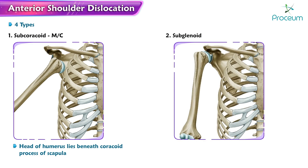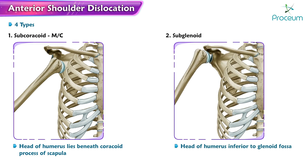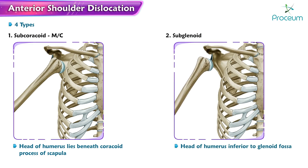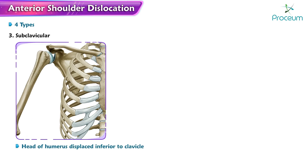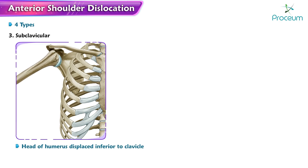In subglenoid dislocation, the head of the humerus is displaced inferiorly, lying below the glenoid fossa. In subclavicular dislocation, the head of the humerus is displaced medially beneath the clavicle.